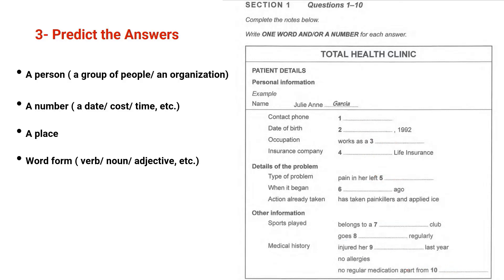And now let's move to the fourth strategy: listen for synonyms. Synonyms are different words with the same meaning, and they are very common in the IELTS test. This means you are given words in the question, but not necessarily to hear the exact word in the listening audio. You hear a different word with the same meaning.